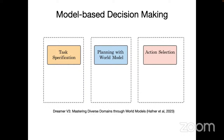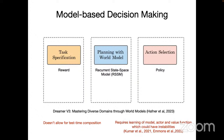For example, in Dreamer v3, the task specification is a reward function, the world model is a recurrent state-based model, and the action selection is a policy at each state. This has limitations: it's difficult to combine different tasks, it requires learning three separate models — the world model, actor, and value function — each with their own failure cases, making it very difficult to get a complete working system.